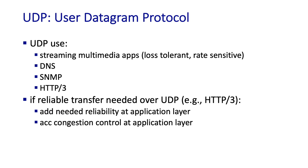These characteristics make UDP useful for certain applications. For example, streaming multimedia applications are tolerant to some segment loss but are rate sensitive, so strong congestion control is undesirable. For DNS and SNMP, it's important that they operate when the network is in a compromised or congested state. And if you need reliable transfer, it's possible to build that at the application level on top of UDP.